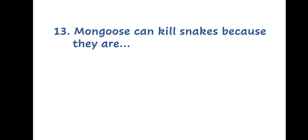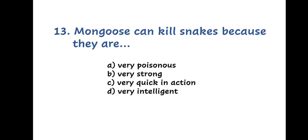Question 13. Mongoose can kill snakes because they are: A. Very poisonous, B. Very strong, C. Very quick in action, or D. Very intelligent.